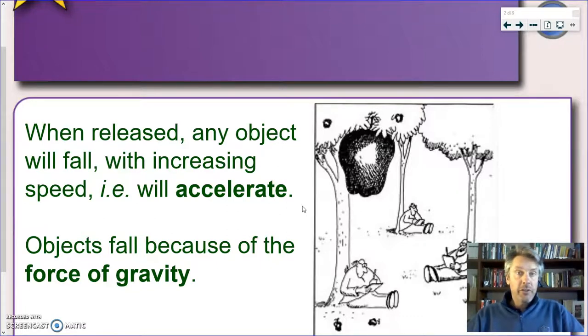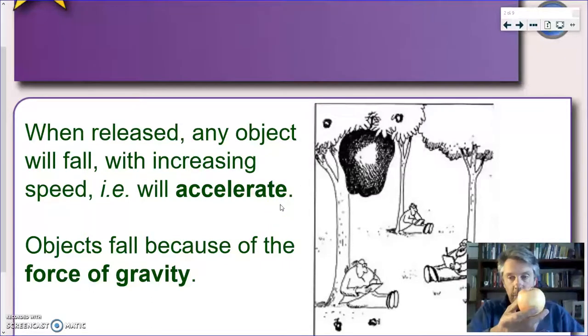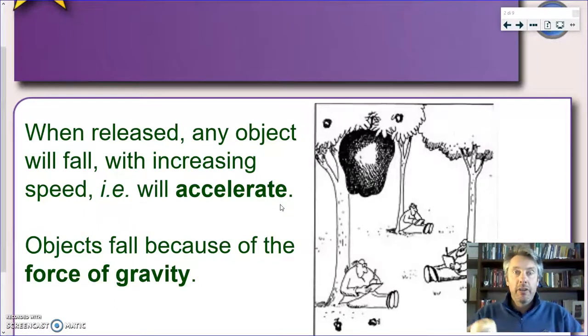The first question for us is, why do things fall? We know that this happens because of the force of gravity, the pull of gravity from the Earth on an object. And we know that if we take any object, including an apple, if I let it go, this apple will fall down. But it will not only fall, it will increase its speed as it goes down. And we know already that an increase of speed is an acceleration.